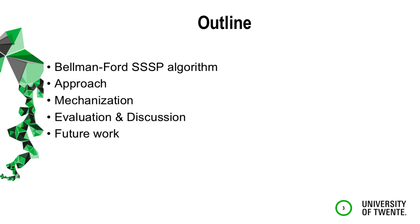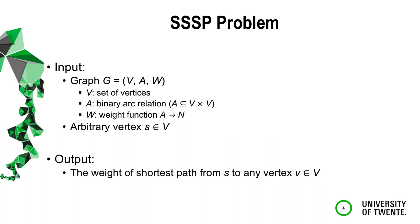The shortest path problem takes as input a graph G consisting of a set of vertices, an arbitrary arc relation A, a weight function, and a source vertex S. As output we find the weight of the shortest path from the source to all other vertices.